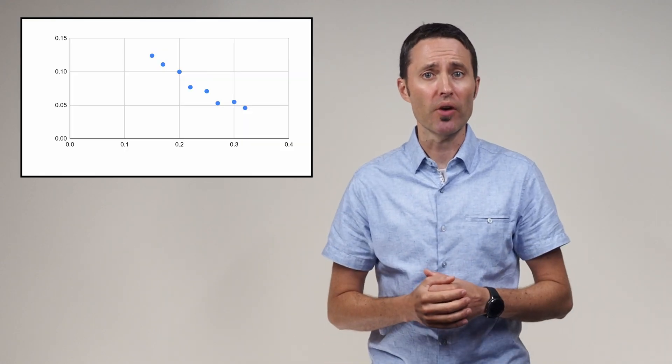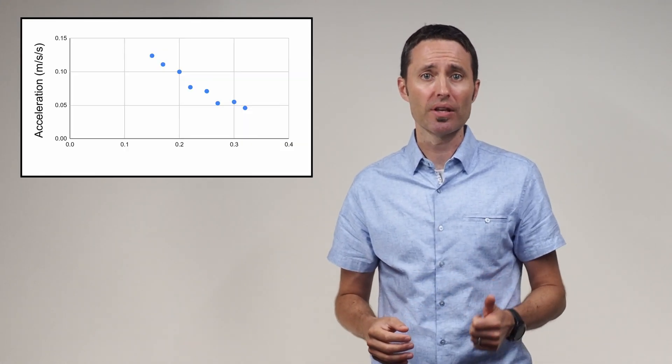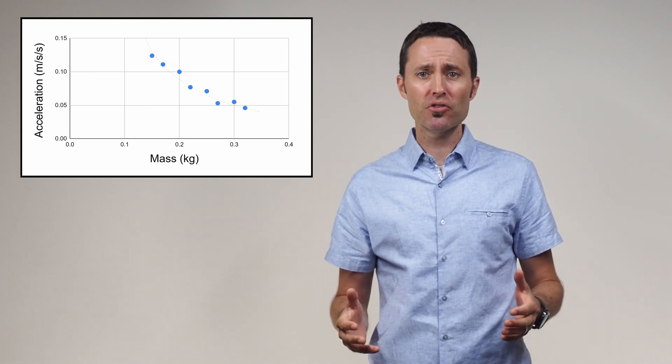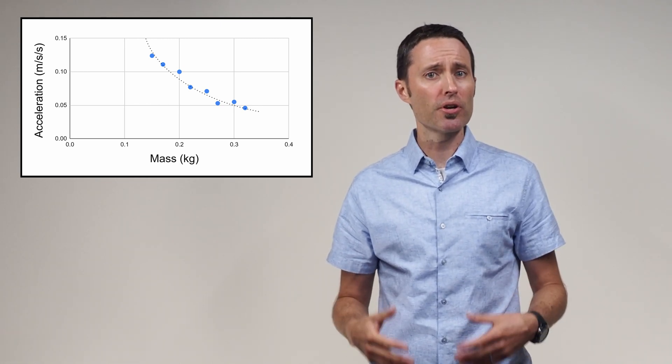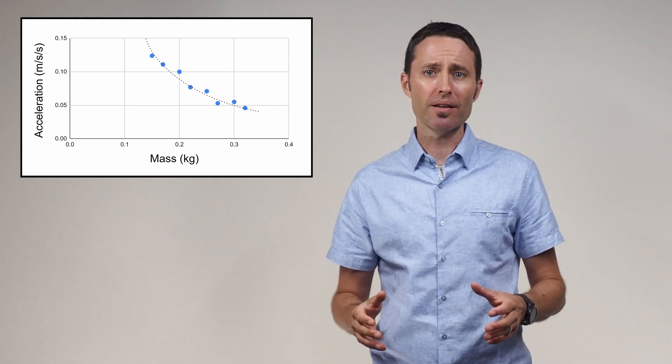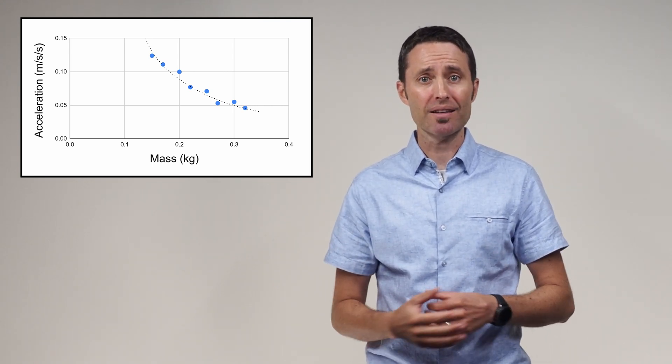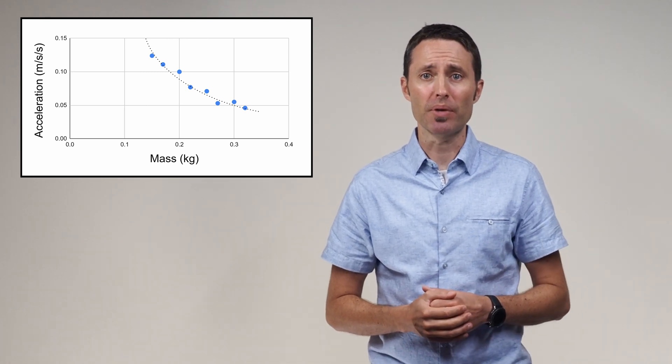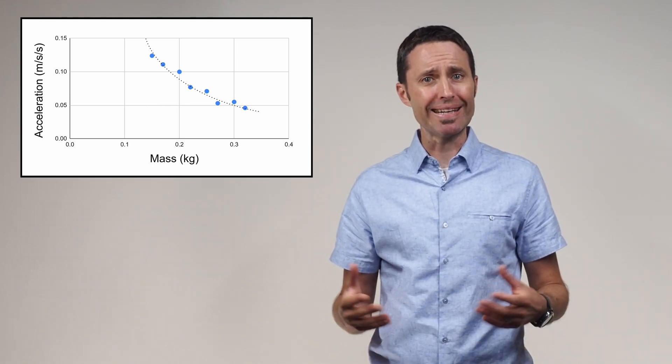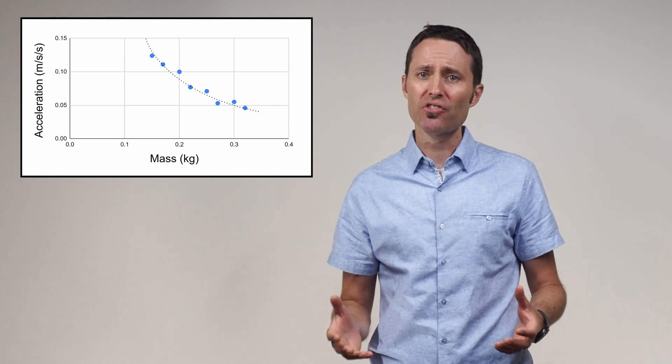Have the students make a graph by placing the acceleration values on the y-axis and the mass values on the x-axis. Students should find that the graph data will produce a hyperbolic trend. In many classes, this is the first time students have encountered a non-linear graph when analyzing lab data. Writing an algebraic equation for a non-linear relationship is a skill introduced at this time.